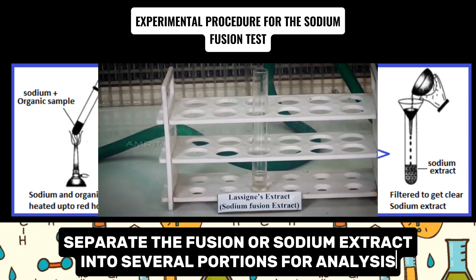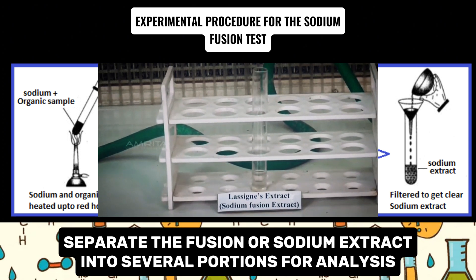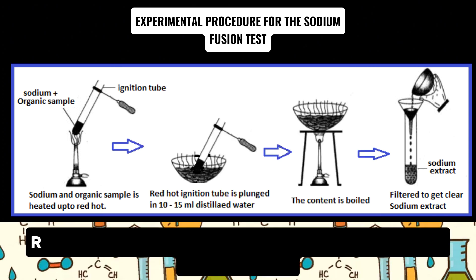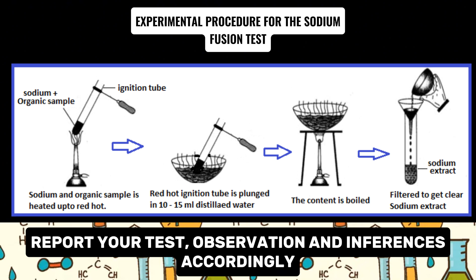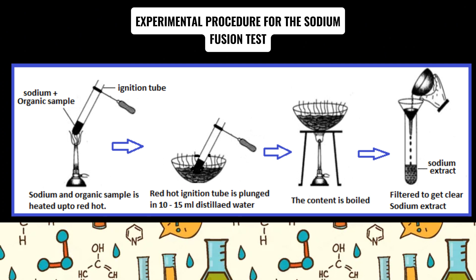The sodium fusion extract is then separated into several portions to carry out the various elemental analyses for nitrogen, sulfur, and the halogens. From your procedure, you will be able to tell which observation is characteristic of a particular element in that organic compound and report accordingly.